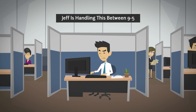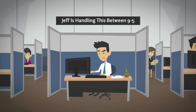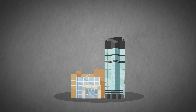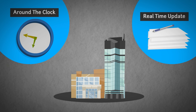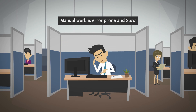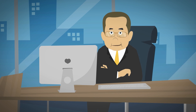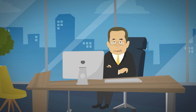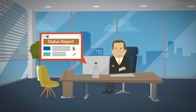Jeff is handling this information manually between 9 to 5. But new business requires around the clock operation with real-time updates. Manual work is error prone and slow. Also, Jeff's boss needs the status report every day when taking his coffee in the morning.